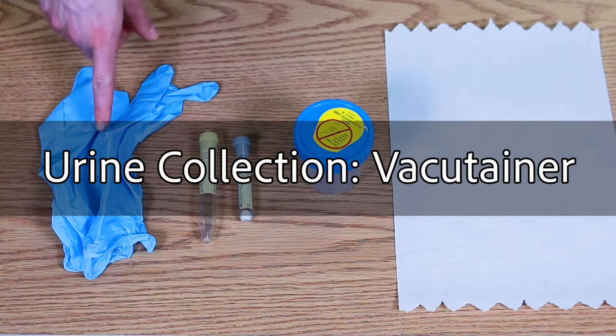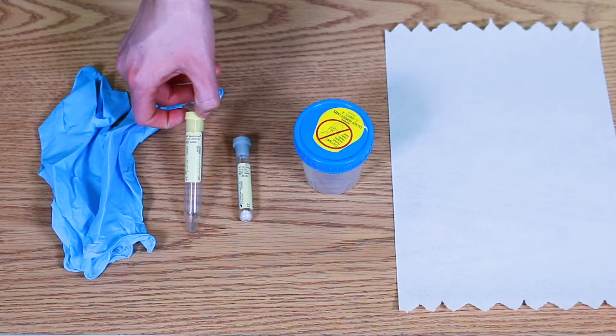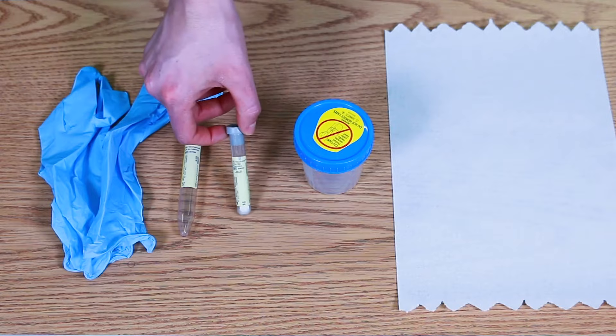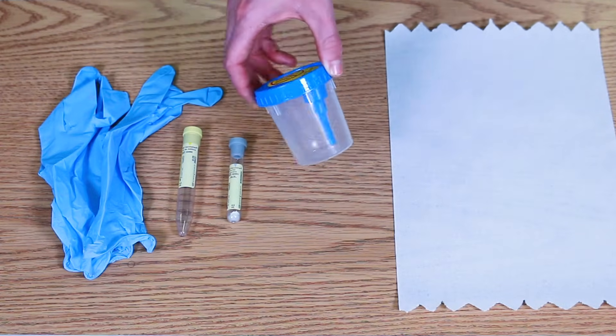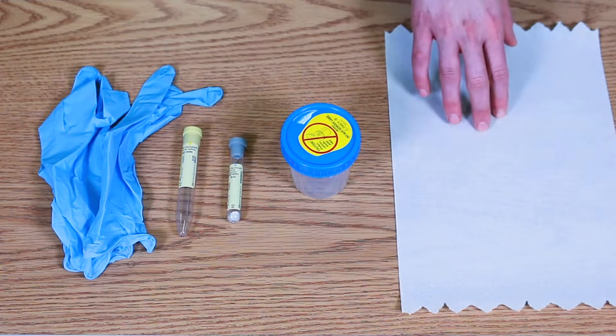For urine collection using a vacutainer, you will need clean gloves, urinalysis tube, culture and sensitivity tube, vacutainer, and a clean pad or paper towel.